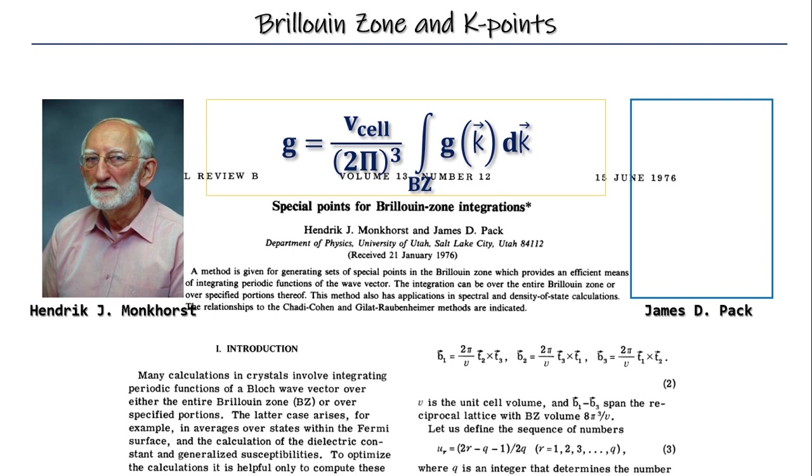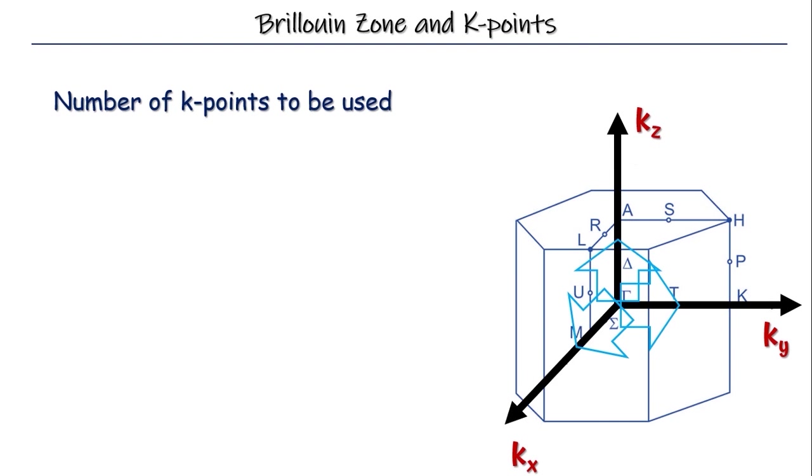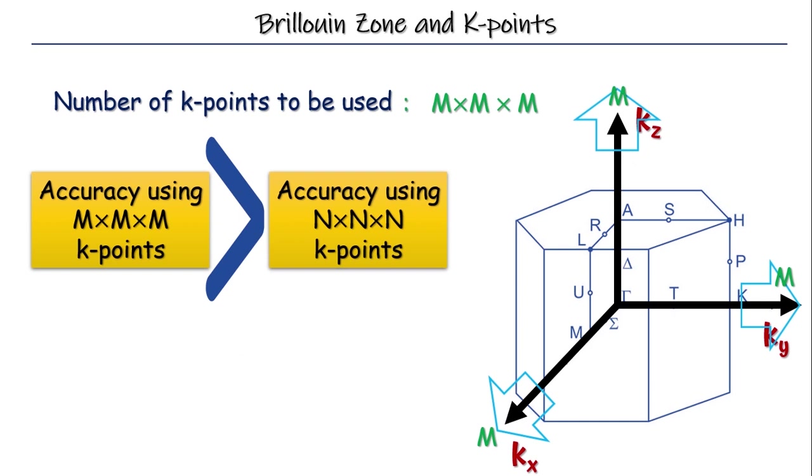To use this method, all that is needed is to specify how many K-points are to be used in each direction of reciprocal space. If M number of K-points are used in each direction, it is usual to label the calculations as having M cross M cross M K-points. Now after the discussion of numerical integration in the previous section, one thing is clear that using M cross M cross M K-points should give more accurate results than a calculation with N cross N cross N K-points if M is greater than N. But at the same time, what you have to keep in mind is the use of a large M is also time consuming.